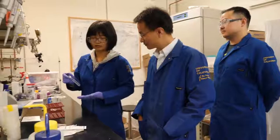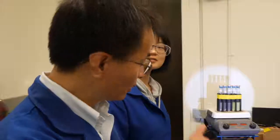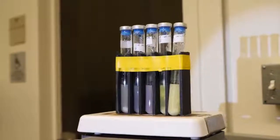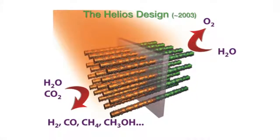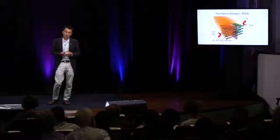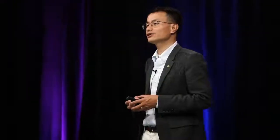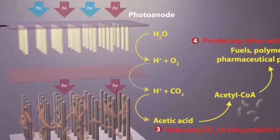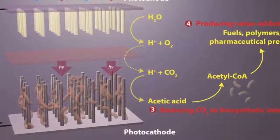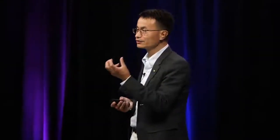More than ten years ago, when we launched the Helios program at the Lawrence Berkeley National Lab, we put this particular artificial photosynthetic design on paper. In order to make this design work, we needed to discover a new class of semiconductor materials that capture sunlight, and a new class of catalysts to promote the desired chemical reactions. Over the past ten years, we finally figured out ways to link a collection of biological and synthetic catalysts to semiconductor nanostructures, and indeed we can do the chemistry as we planned.